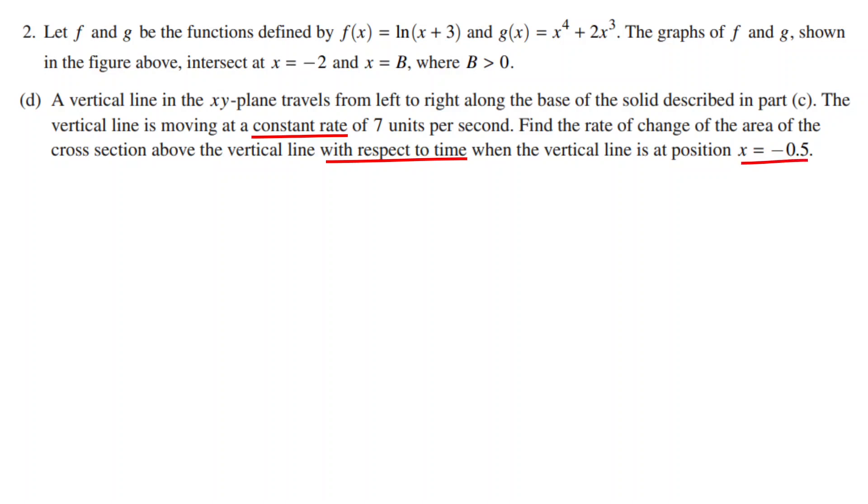This looks pretty confusing but let's try to simplify what it is asking for. We are trying to find the rate of change of the area of the cross section with respect to time at x equals -0.5. This is dA/dt at x equals -0.5. From part c, we know that the area of the cross section A(x) is equal to (f(x) - g(x))^2.